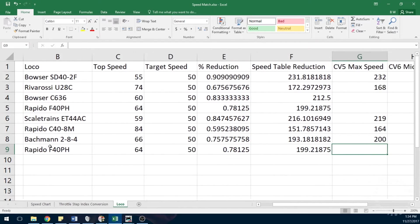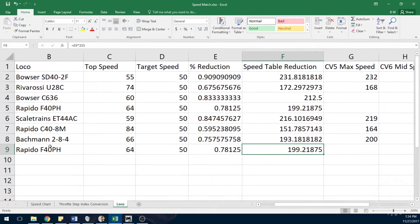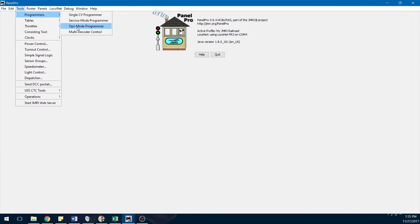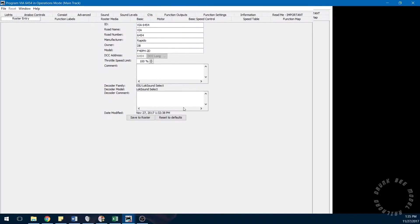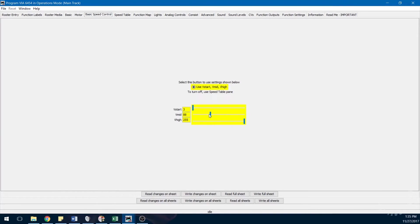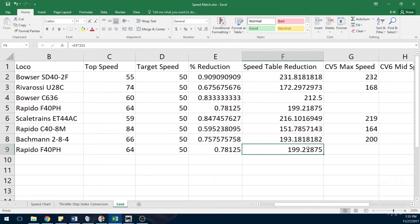The spreadsheet tells me that I need to reduce CV5 from the default value of 255 down to 199. All I have to do then is to go into my operations mode programmer, also known as programming on main on some other DCC systems, select the locomotive I want to program, which is via 6454, and then write a value of 199 into CV5.